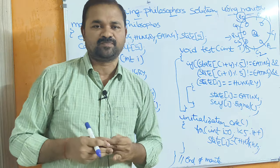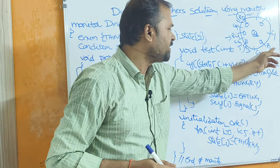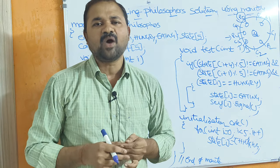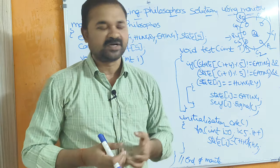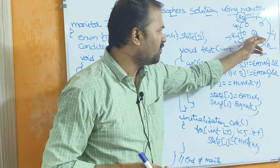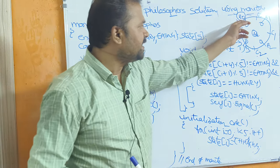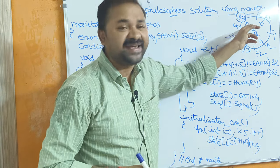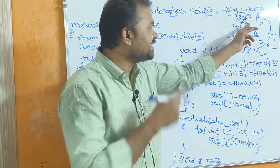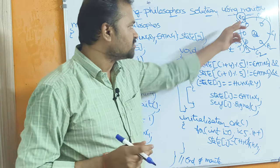Let's see what the Dining Philosopher's Problem is. There are 5 philosophers: P0, P1, P2, P3, and P4, and we have 5 chopsticks — chopsticks are nothing but forks. We have a bowl of rice, and in front of each philosopher we have a plate. For eating, each philosopher needs 2 chopsticks.